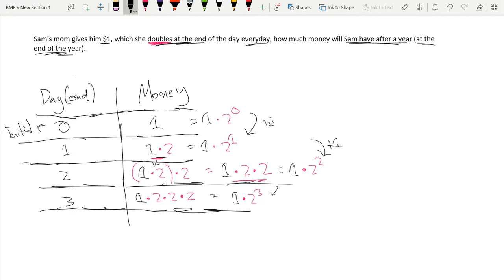So by day 365, we would have one times two to the power of 365, because we've doubled our money 365 times. And this number is so massive—this number is equal to 7.515336 times 10 to the power of 109. That's how massive this number is.